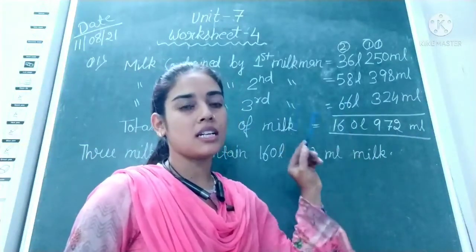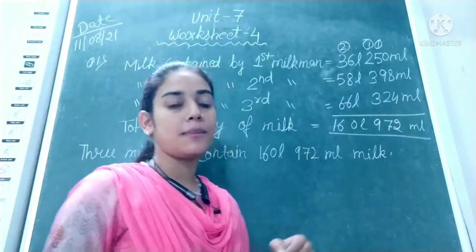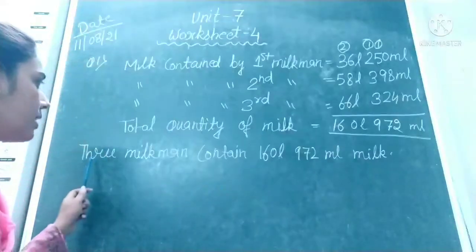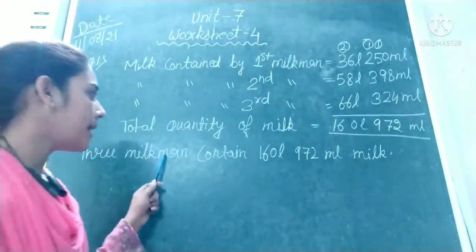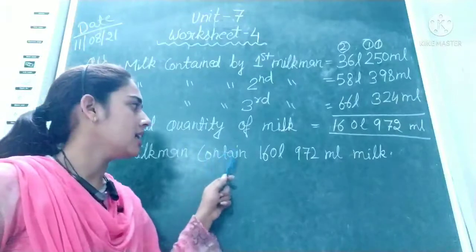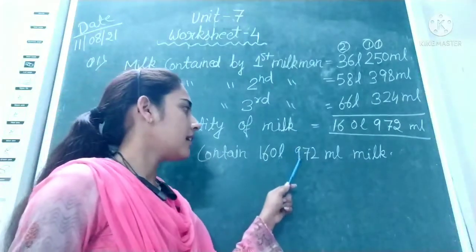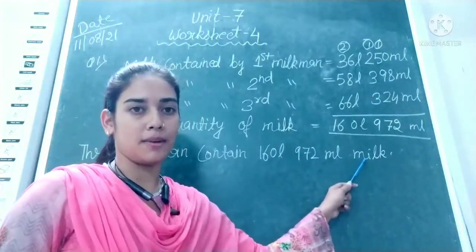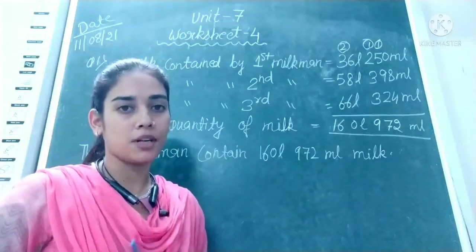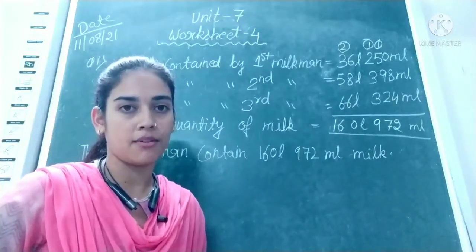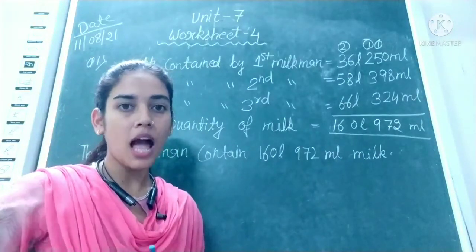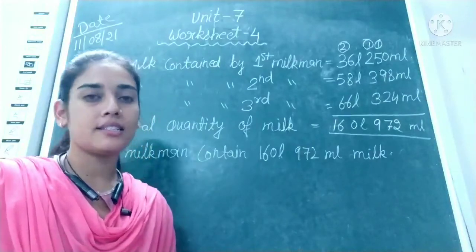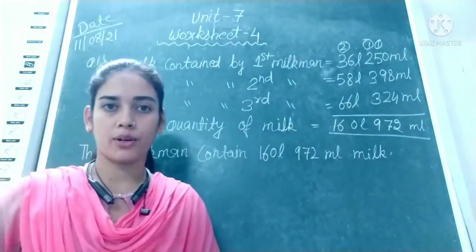This total quantity is contained by the three milkmen. So the last statement is: three milkmen contained 160 litres 972 millilitres of milk. This is the statement for question number one. I hope all of you have understood this question. Let's do question number two.